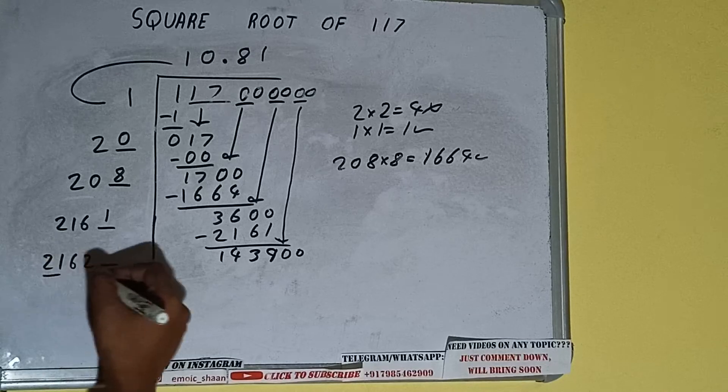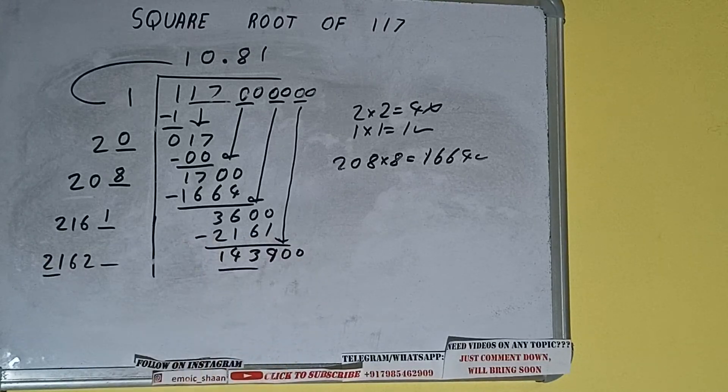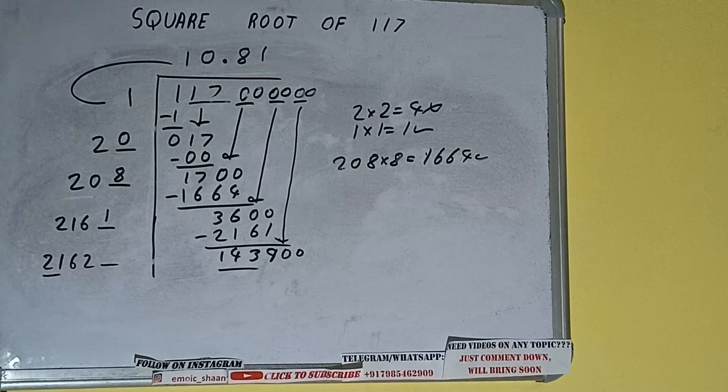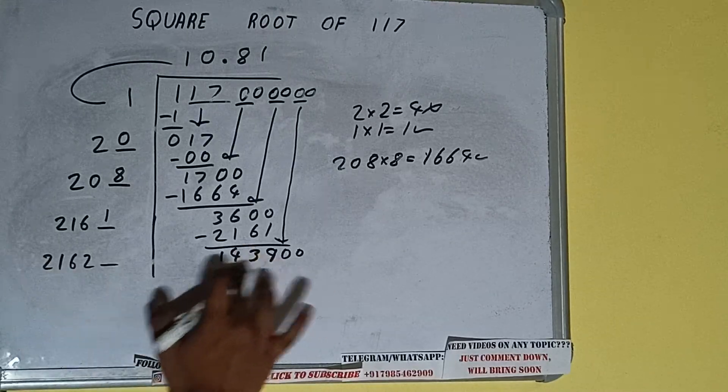Now compare this 21 with this 143. So 21 7 times is 147. So 7 times we cannot try. We have to try 6 times.